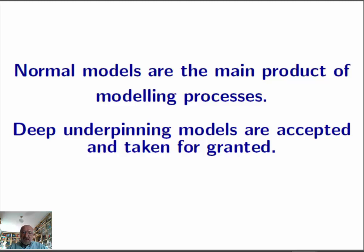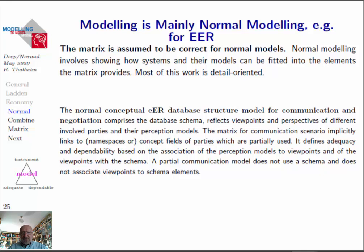What does this mean for our entity relationship modeling? Modeling is mainly based on some kind of matrix — we will come to the notion of matrix in a minute. For our normal models, for a communication and negotiation setting, for our extended entity relationship database structure modeling, we need to specify the database structure, the viewpoints, the perspectives, and maybe some kind of perception models used as origins. Communication scenario means we have to have proper notions and proper terms to communicate in our communities. That means we are using a namespace and we define some kind of adequacy and dependability mainly for our model, with adequacy and dependability given in the deep model.